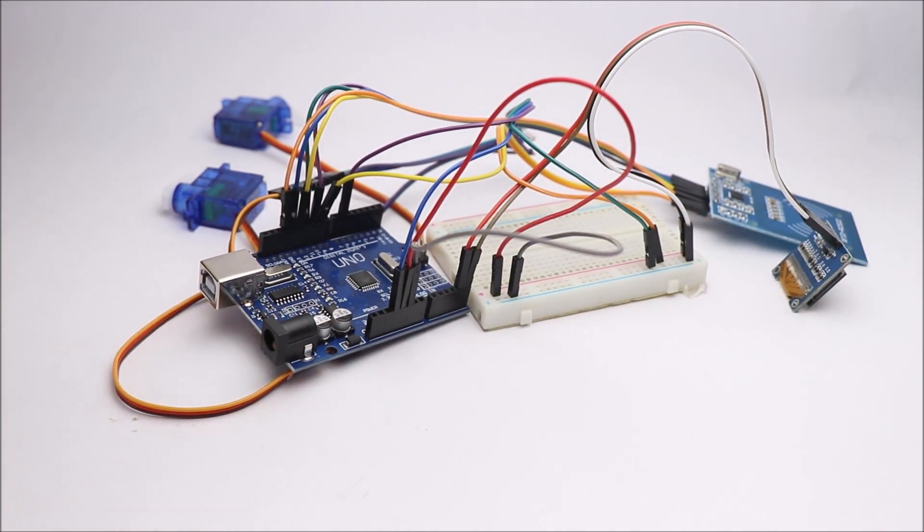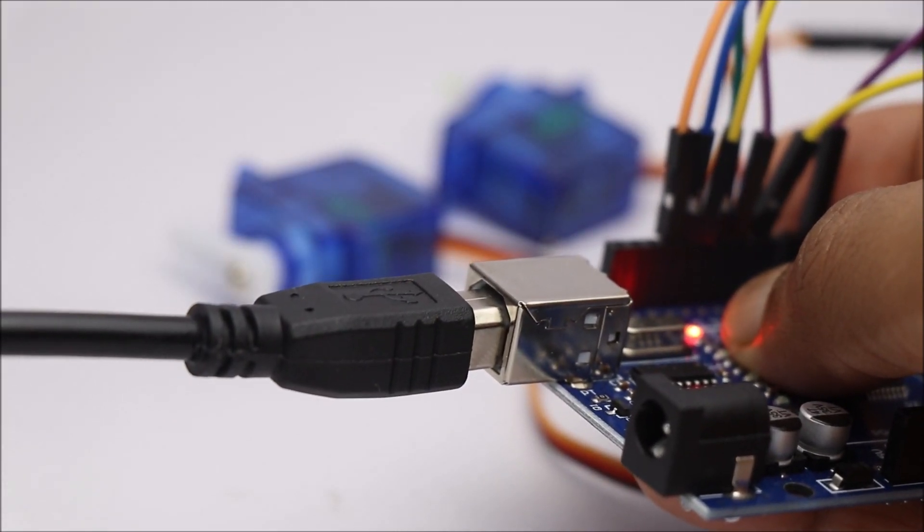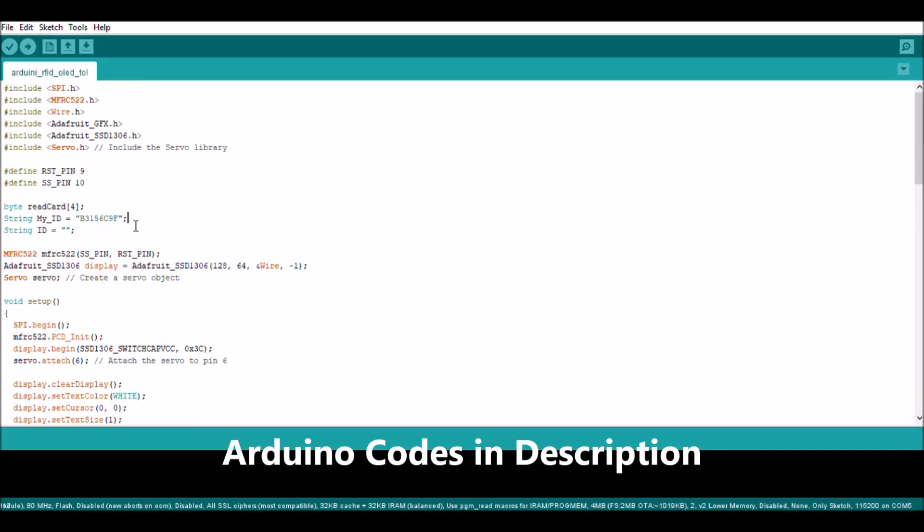Select the proper board and port on IDE and upload the code. Later, open the serial monitor and note down the UID of your tag.